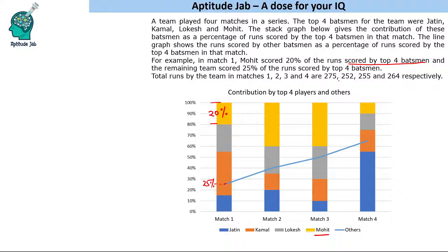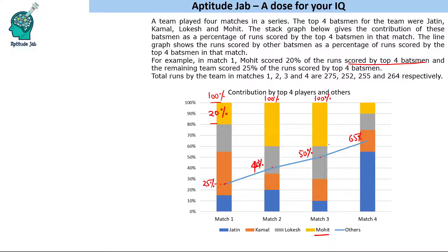The total runs scored by the team in matches 1, 2, 3, and 4 are 275, 252, 255, and 264 respectively. The top four score 100 percent combined, and the rest of the players' runs are expressed as a percentage of that. So the other batsmen contributed 25%, 30%, 40% — wait, this is 40 percent — 50 percent, and 65 percent respectively, giving totals of 125%, 140%, 150%, and 165% of the top four's runs.